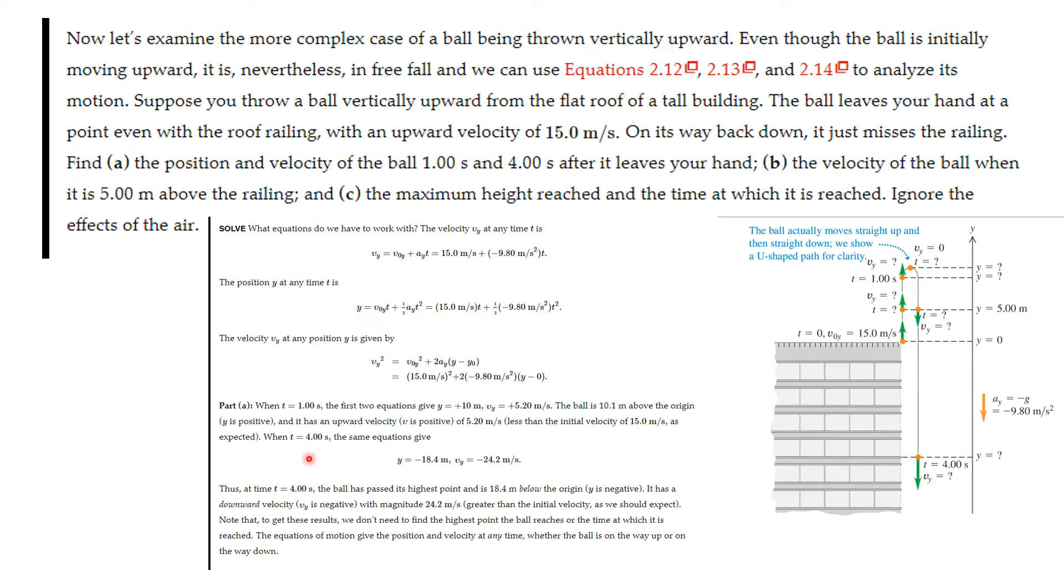So when we plug in t equal one, the first two equations tell us that y is plus 10 meters. And the velocity at that time is plus 5.2 meters per second. It's still going up. So the ball is 10.1 meters above the origin and it has an upward velocity of 5.2 meters per second.